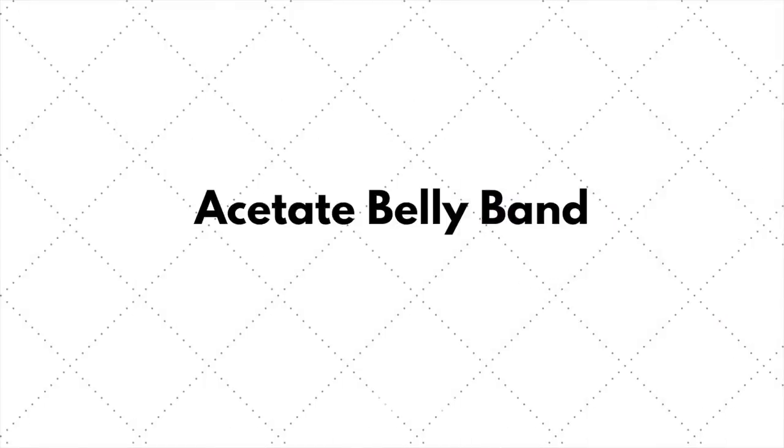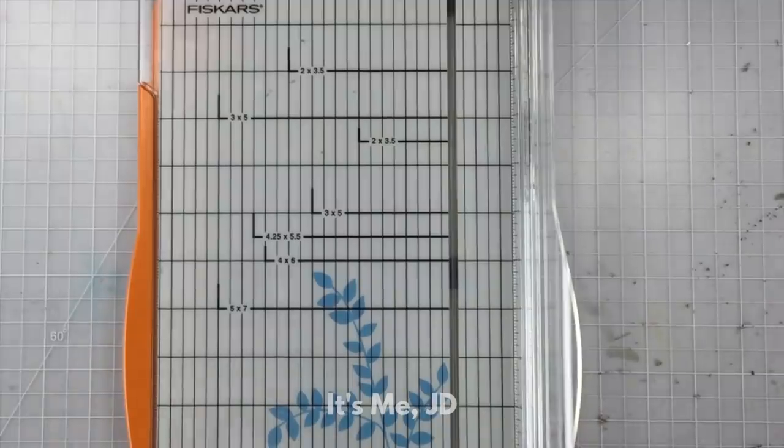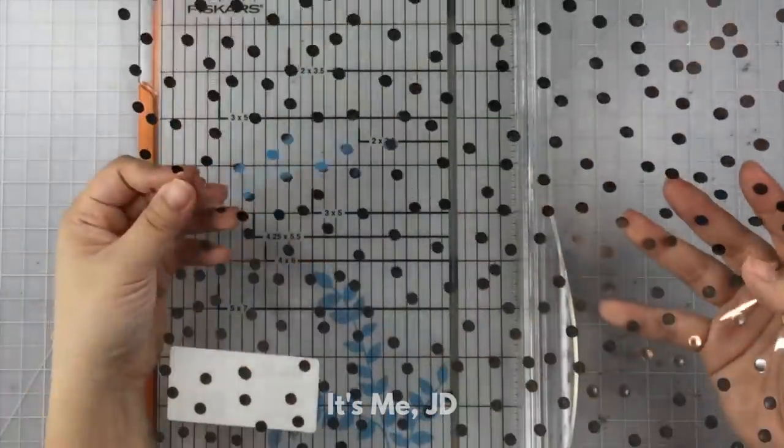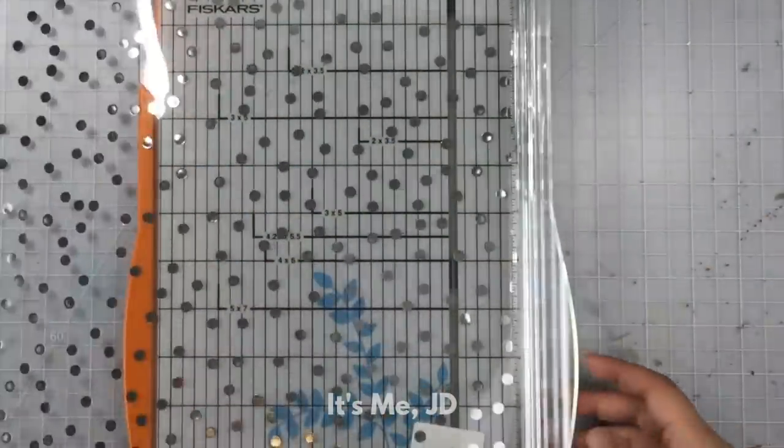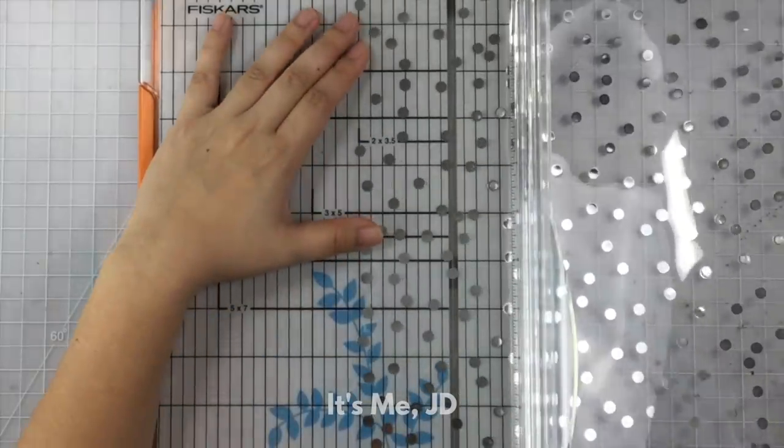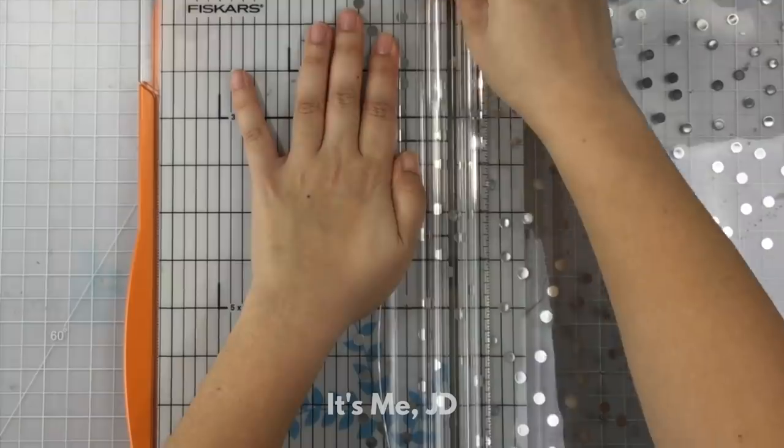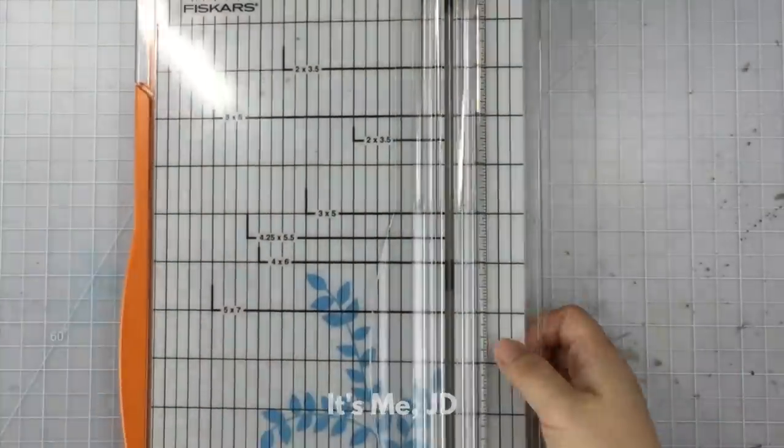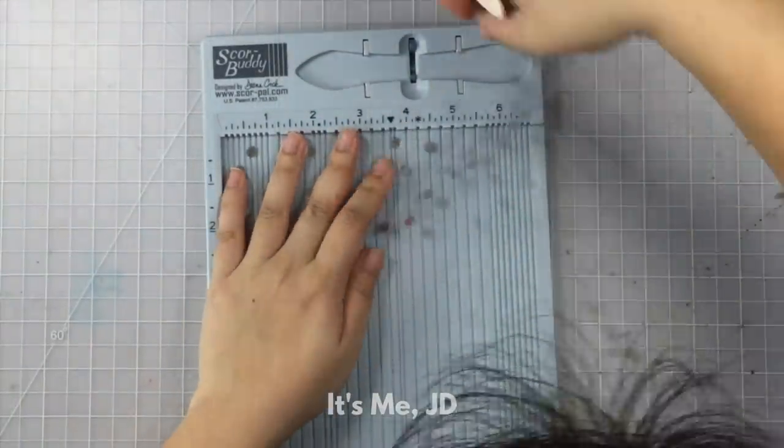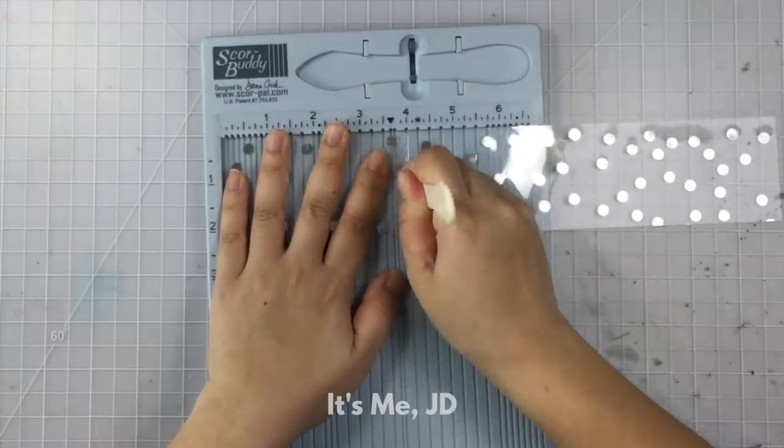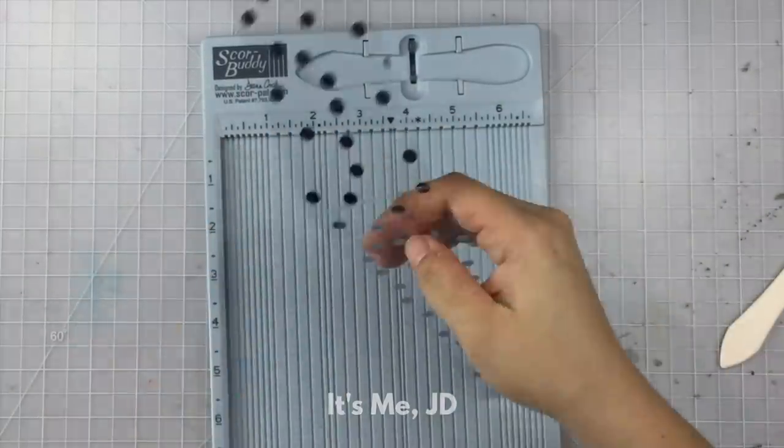For this next handmade card idea I decided to use acetate for my belly band. I have a really fun acetate sheet that I got from my local craft store like years ago. I don't even know if they still carry it but if your local craft store has something like this it's definitely fun to get as it has this really cute pattern on top of the acetate and I didn't have to do the heat embossing or any of that.